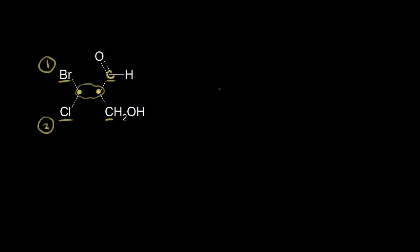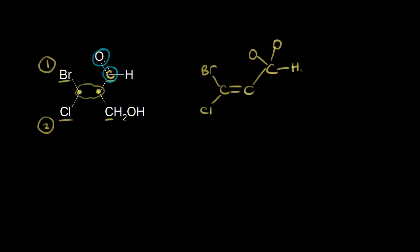To break the tie, we need to keep going. I'm going to redraw this molecule. We have a carbon bonded to a bromine and a chlorine, and the carbon on the right is bonded to another carbon. This carbon is double bonded to an oxygen, so for the purpose of assigning priority, we're going to pretend like this carbon is bonded to two oxygens. We also have this carbon bonded to a hydrogen. The other carbon is bonded to two hydrogens, directly bonded to an oxygen, and that oxygen is bonded to a hydrogen.